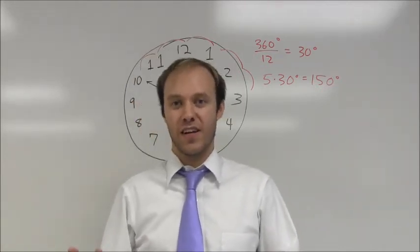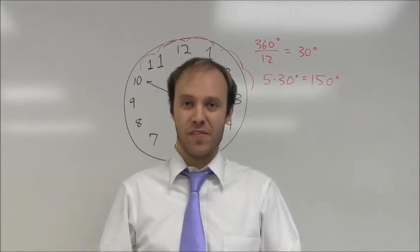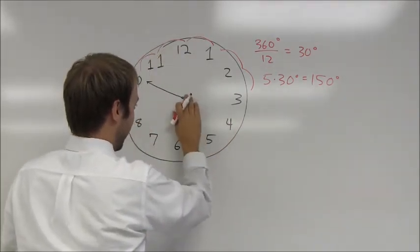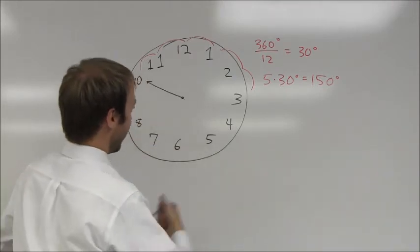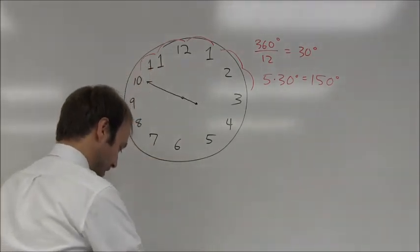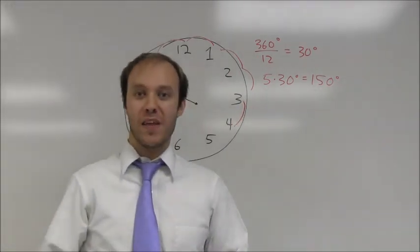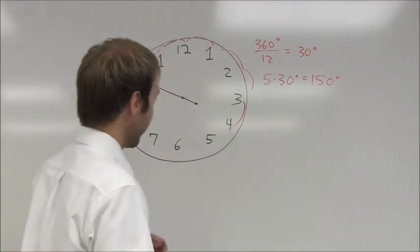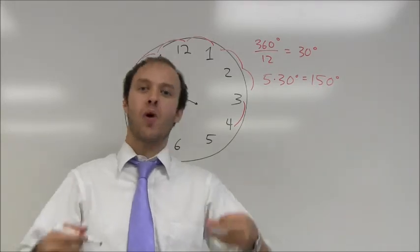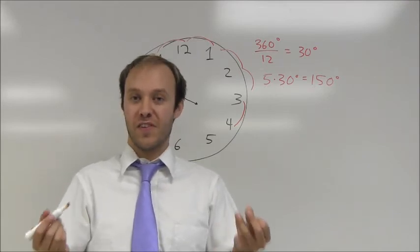Unfortunately, that hour hand is going to continue to move throughout the hour, and it's not necessarily going to be pointing to the three by the time I'm 50 minutes through the hour. And in fact, it's going to be pointing nearly to the four, and it might be better if I had even drawn it that way to begin with. So, it's going to be very, very close to the four, but not quite there. So, what I've got to try to figure out is how much of that additional 30 degrees between the three and the four does that hand move? Well, this is not a very tough calculation.